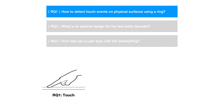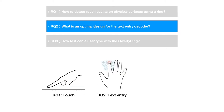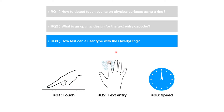In the remainder of the presentation, I would like to introduce the key problems to implement the QWERTY Ring. The feasibility of typing on a physical surface using a ring is unexplored. We raised three research questions: First, how to detect touch events on a physical surface using a ring? Second, what is the user behavior when using QWERTY Ring and how to design the text entry decoder? Third, how fast can a user type with the QWERTY Ring? We conducted three user studies, each contributing to answer one of the three research questions.